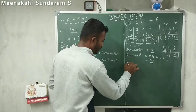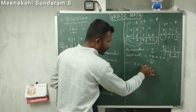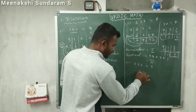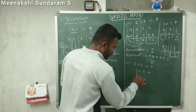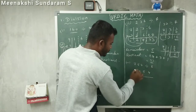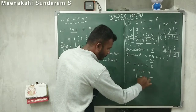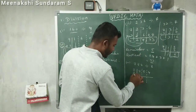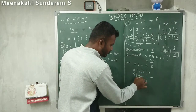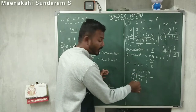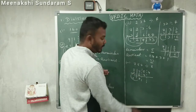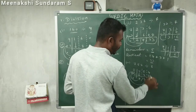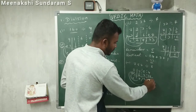Problem number 4: 754 divided by 8. As usual, write 754. Draw the line, then write the divisor 8. Split the number by 1-digit groups. How much needs to be added to 8 to make 10? That is 2 — write a 2 here. Bring down the first number 7. Multiply 7 into 2: 14. Write 14. Add 5 plus 14, which becomes 19. Multiply 19 into 2: 38. Add it — it becomes 42.